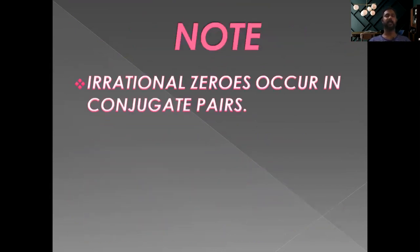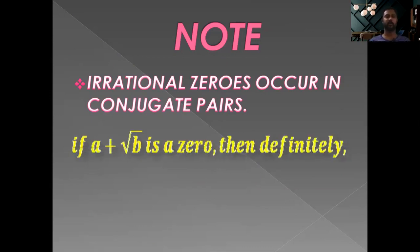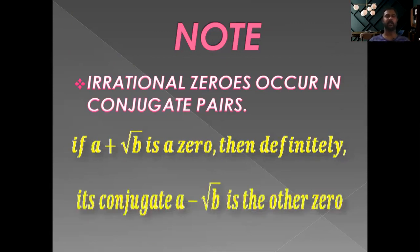Note that irrational zeros occur in conjugate pairs. If a plus root b is a zero, then a minus root b is the other zero — its conjugate. The term conjugate means simply changing the middle sign. This applies only in the case of irrational zeros.